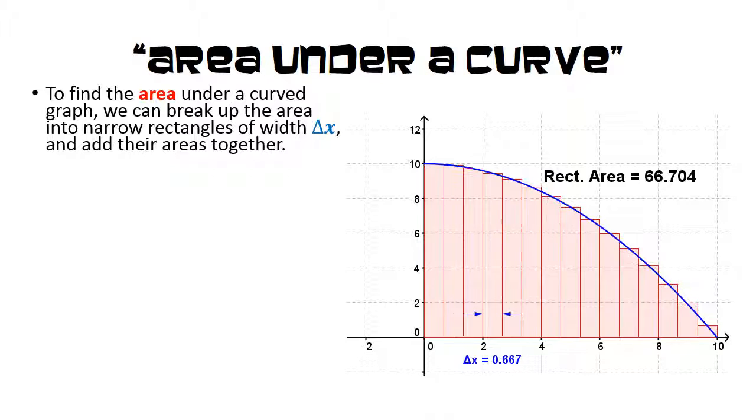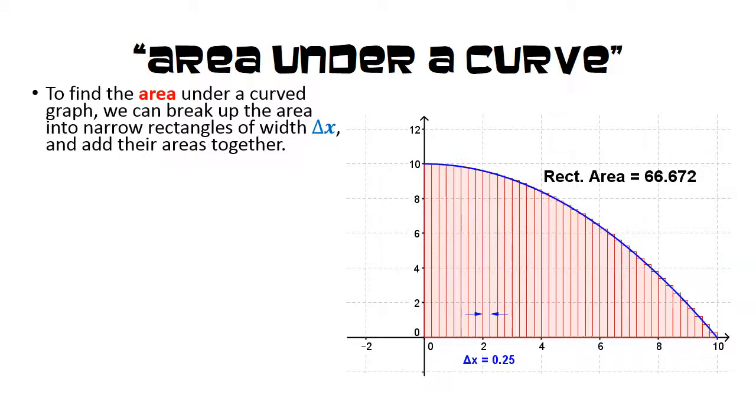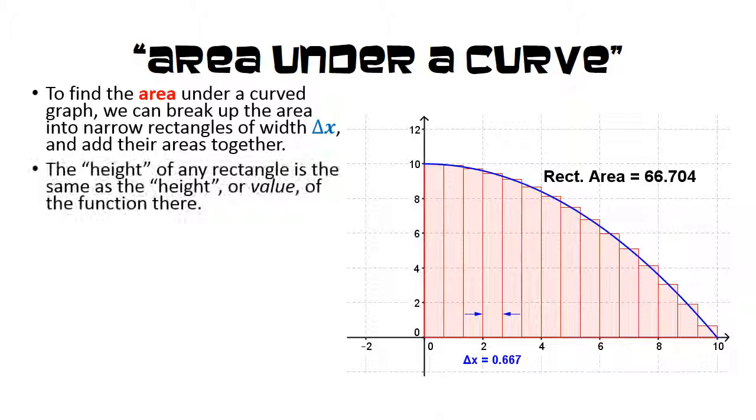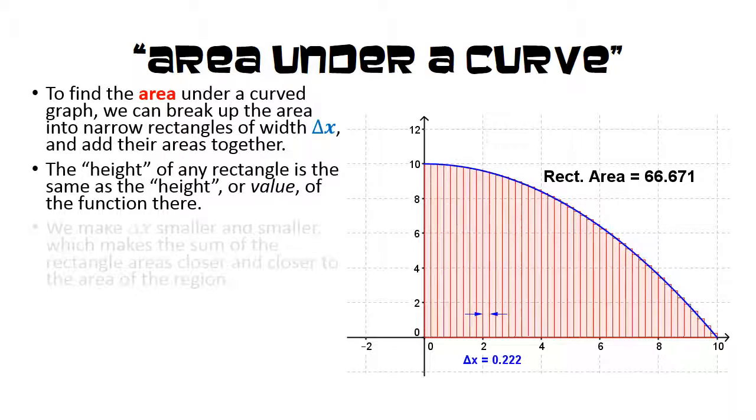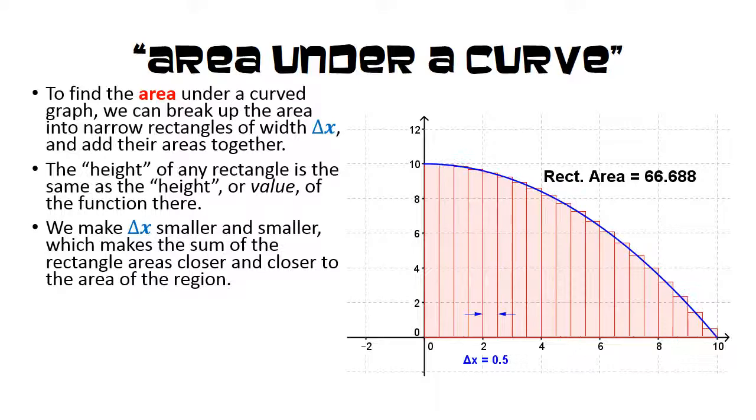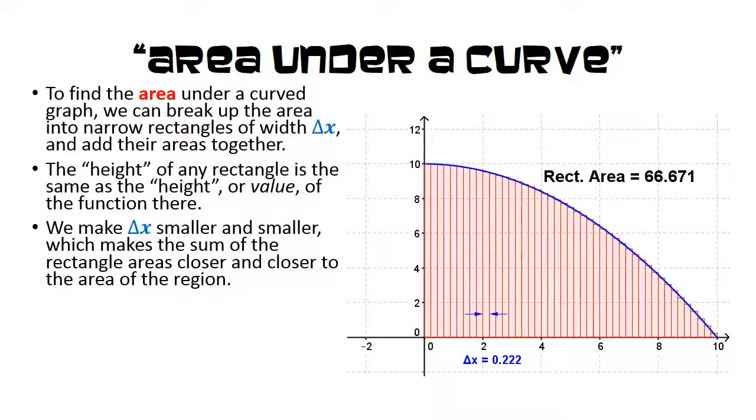To find the area under a curved graph, we can break up the area into narrow rectangles of width delta x and add their areas together. The height of any rectangle is the same as the height, or the value, of the function there. We make delta x smaller and smaller, which makes the sum of the rectangle areas closer and closer to the actual area of that region.